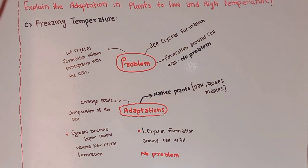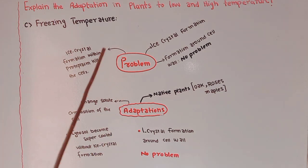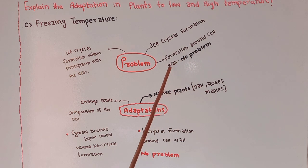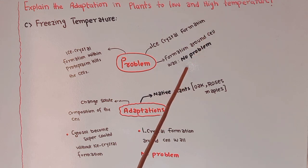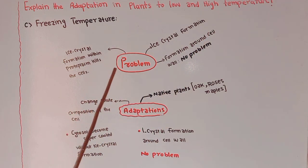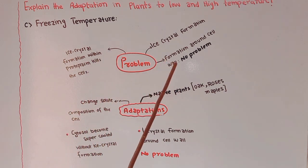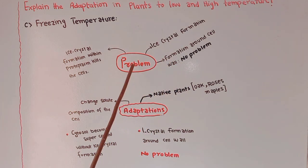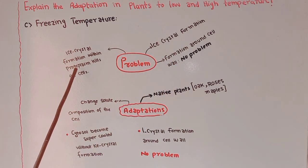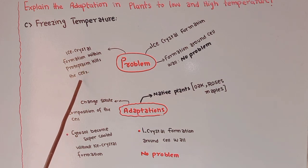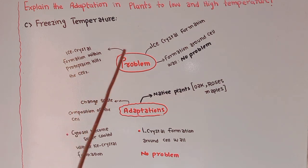At freezing temperature, plants face the problem of ice crystal formation within the protoplasm and around the cell wall. Ice crystal formation around the cell wall is no problem for plants and does not harm the plant cell. However, ice crystal formation within the protoplasm kills the plant cells.